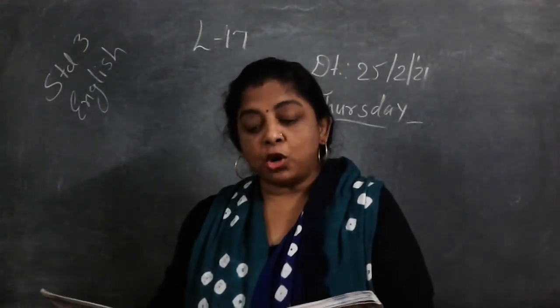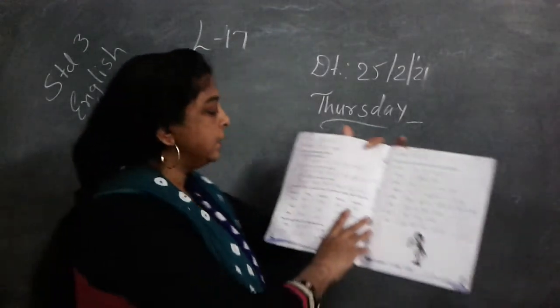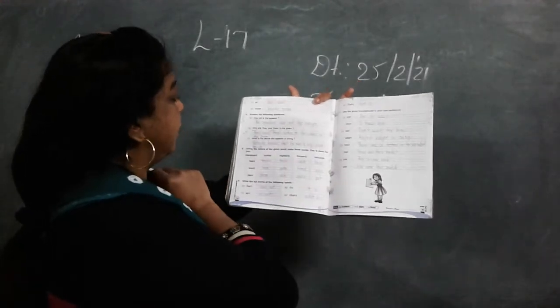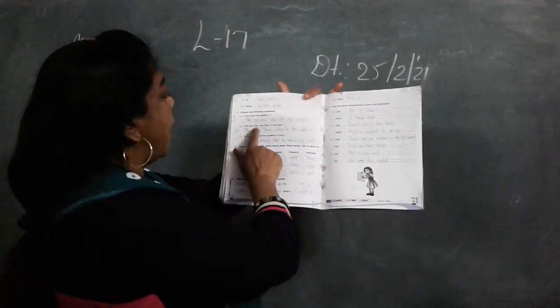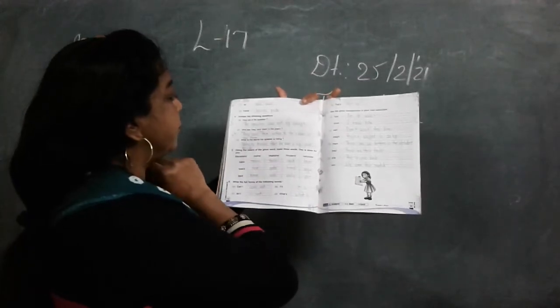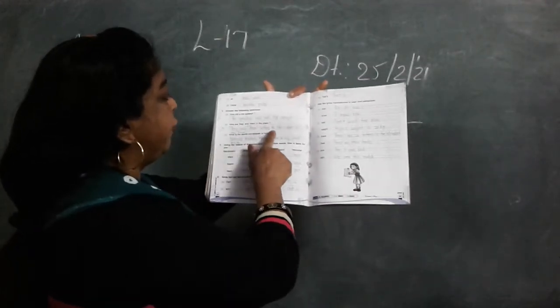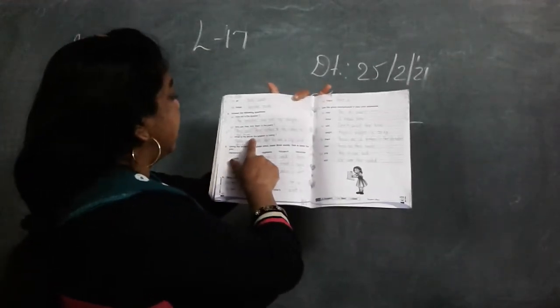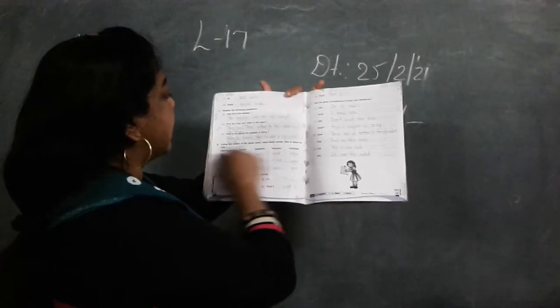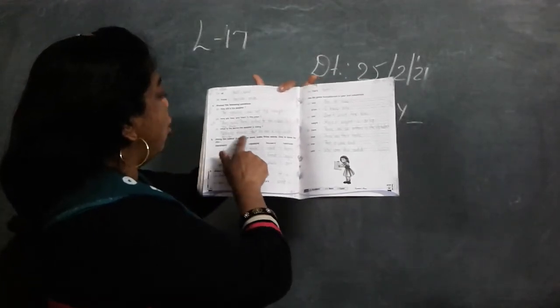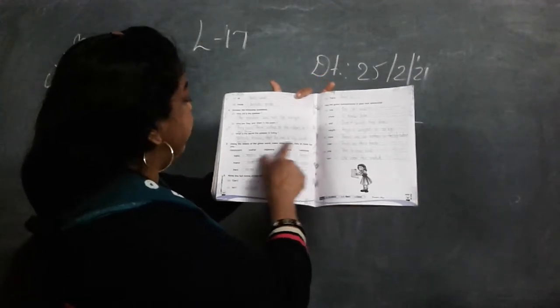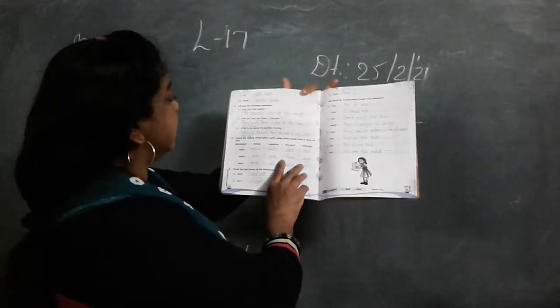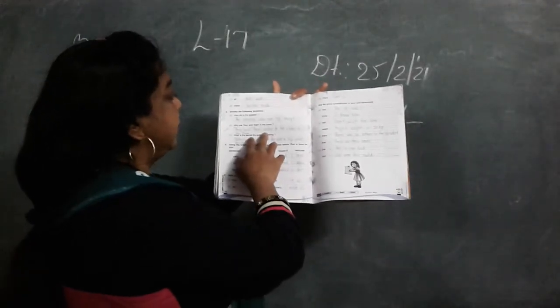Here we have the answer to the question, how old is the speaker? The answer is, the speaker was not big enough. You can see the answer is over here. B. Who are they and them in the poem? So, the answer is they and them refers to the elders in the poem. C, what is the secret the speaker is hiding? So, answer is nobody knows that he was a big giant inside.